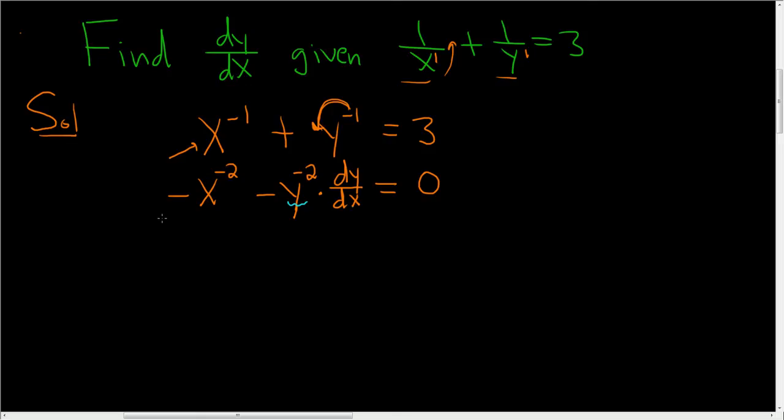So it looks like we have to solve for dy dx, so maybe add this to both sides. Plus x to the negative 2, plus x to the negative 2. So we get negative y to the negative 2, dy dx equals x to the negative 2.